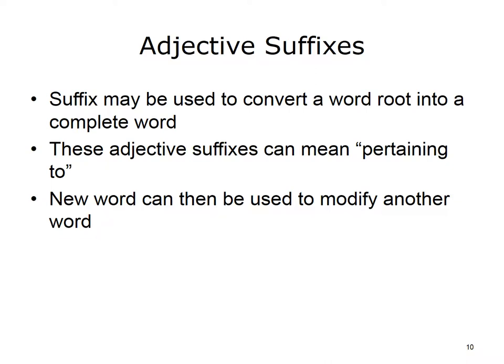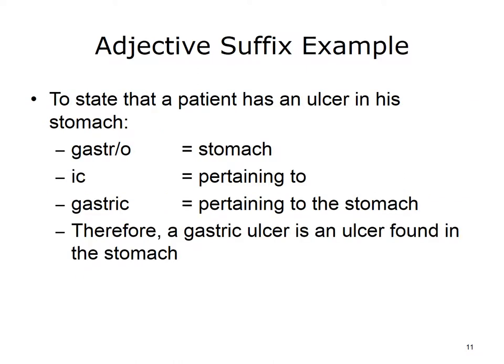A suffix may be used to convert a word root into an adjective and a complete word. Adjective suffixes typically mean pertaining to. This new word can then be used to modify another word. Here is an example: to state that a patient has an ulcer in his stomach, we take the word root gastro, which means stomach, and add the suffix -ic, which means pertaining to. When we combine the parts, we drop the O because we don't use two vowels together. We therefore get gastric, or pertaining to the stomach. So a gastric ulcer is an ulcer found in the stomach.